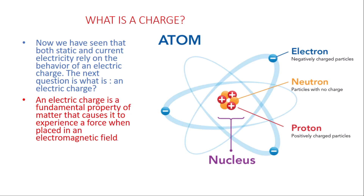We know that matter is made of atoms, and atoms contain electrons, protons, and neutrons. Electrons are negatively charged and protons are positively charged, while neutrons have no charge. So if an object has an overall charge — positive or negative — and we place it in an electromagnetic field, which is either an electric field or a magnetic field, this object will experience a force.